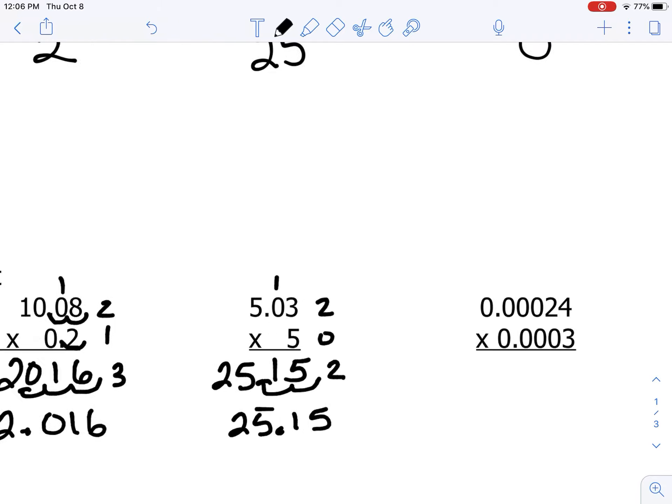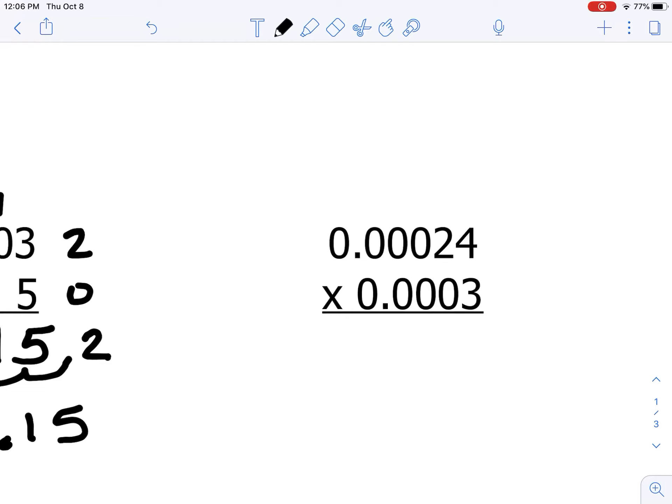The last one here, I'm going to have to zoom in. It requires some good eyesight here. So I'm going to go ahead and multiply. 3 times 4 is 12, 3 times 2 is 6 plus 1 is 7.